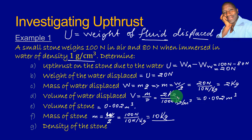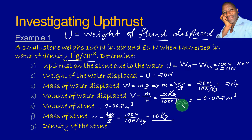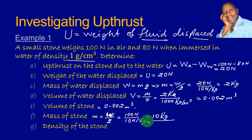Notice that I'm putting units alongside the physical quantities I substitute into equations, so I can show how they cancel out. For example, kilograms cancel with kilograms, leaving metres cubed. Newtons cancel with newtons, leaving kilograms. When dividing by a unit in the denominator, it automatically moves to become a numerator.